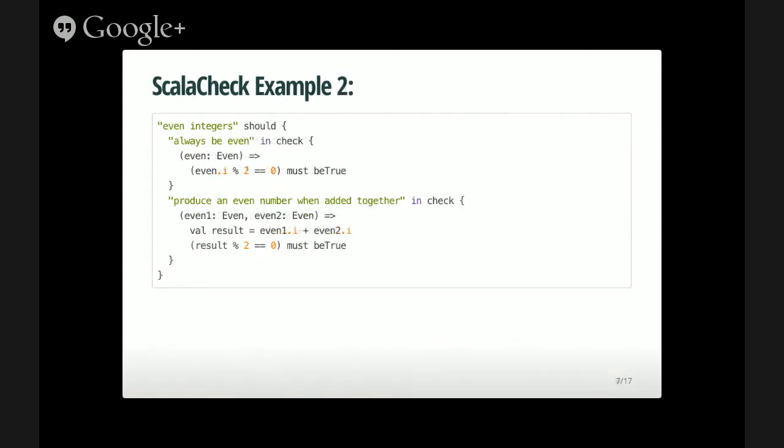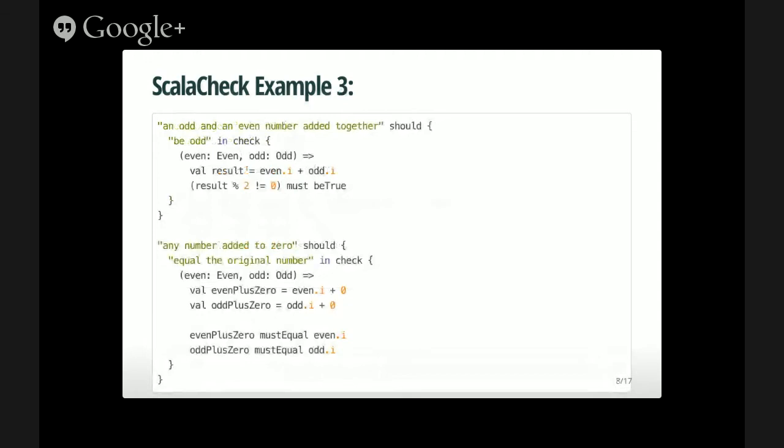We can do the same thing with even numbers. You can make sure that an even number is always even, or when you add two even numbers together, you can still get an even number. And a slightly more interesting example, although still pretty toy here, is that if we add an odd and even number together, it should still be odd. So just showing that you don't have to use it entirely, only the same type with which you're working with. And also you could have multiple matches if you wanted to. So in the case of you don't have to independently check your even numbers added to zero will still equal the same number and your odd numbers. You could check both of them at the same time in the same test if you wanted to, which sometimes might be nice.